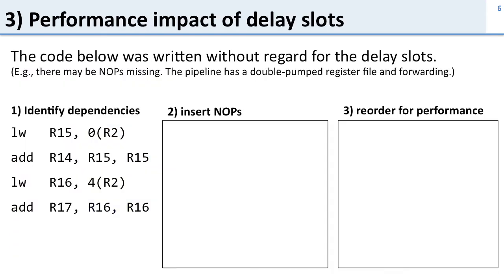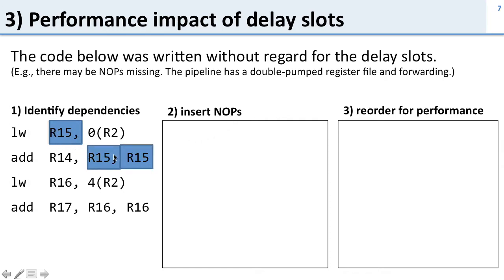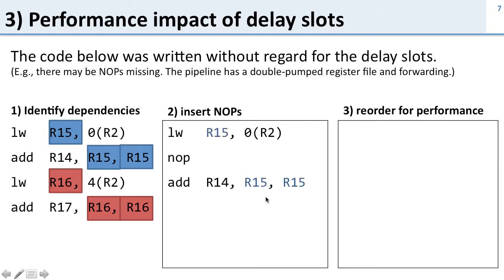Now let's look at the performance impact of delay slots. Here's some code that ignores the delay slots after the load word instructions, so we need to fill these in. The simple way is to insert no-ops. Going through and inserting no-ops, we can see the dependencies — the first load word is needed by the first add, and the second load word generates results needed by the second add, so we put a no-op between each. These no-ops don't do anything useful.